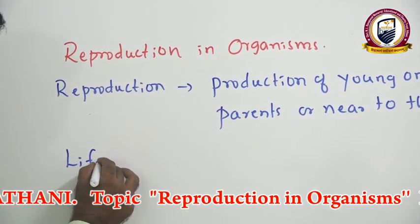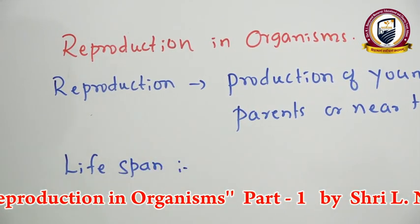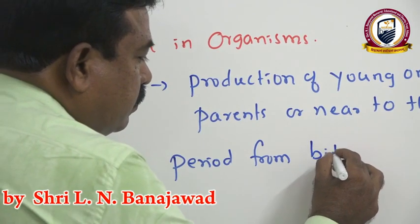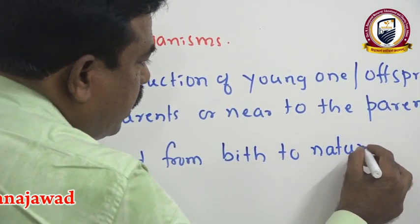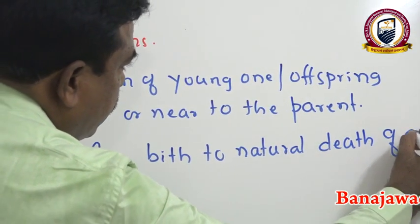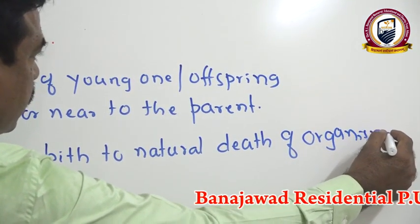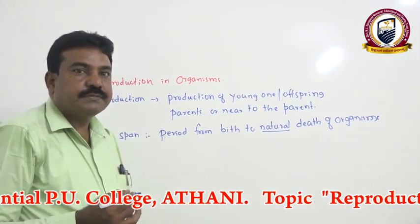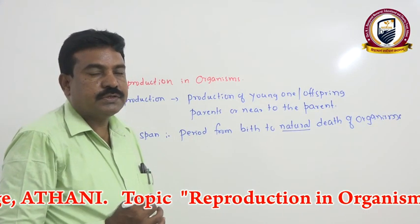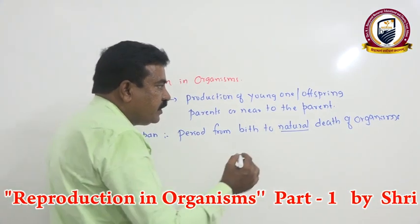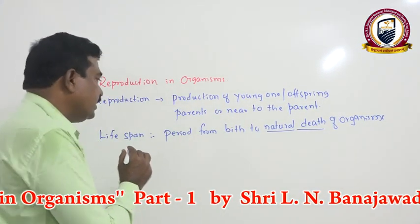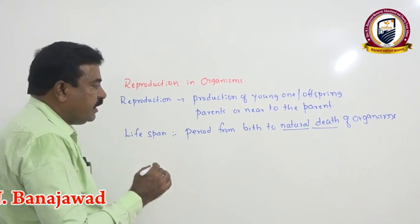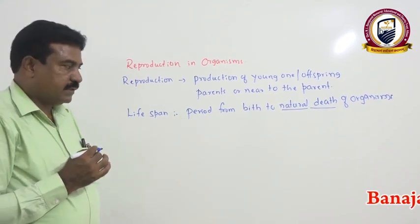The first term in this topic is life span. Life span means the period from birth to the natural death of an organism. We use the word 'natural death' because sometimes organisms may die due to disease, accidents, or natural disasters — and that period we do not consider as the life span. Therefore, life span of an organism is defined as the time or period from birth to natural death of the organism.